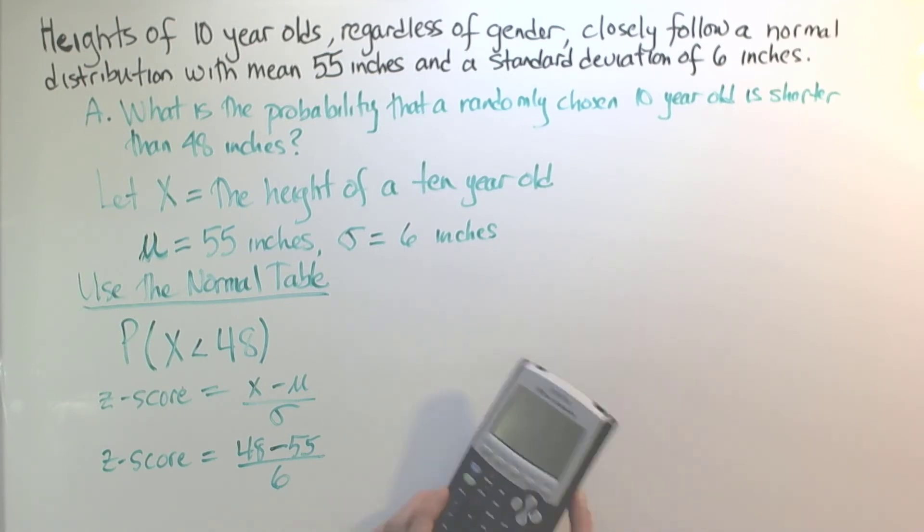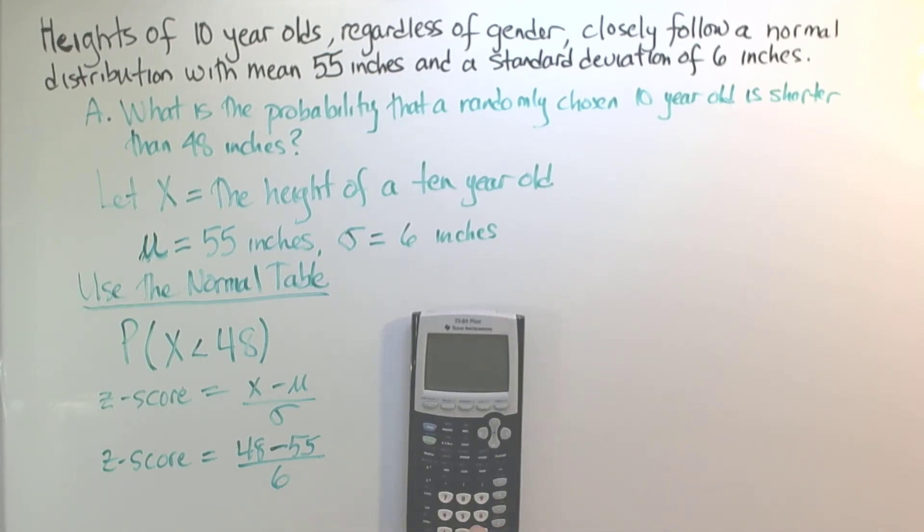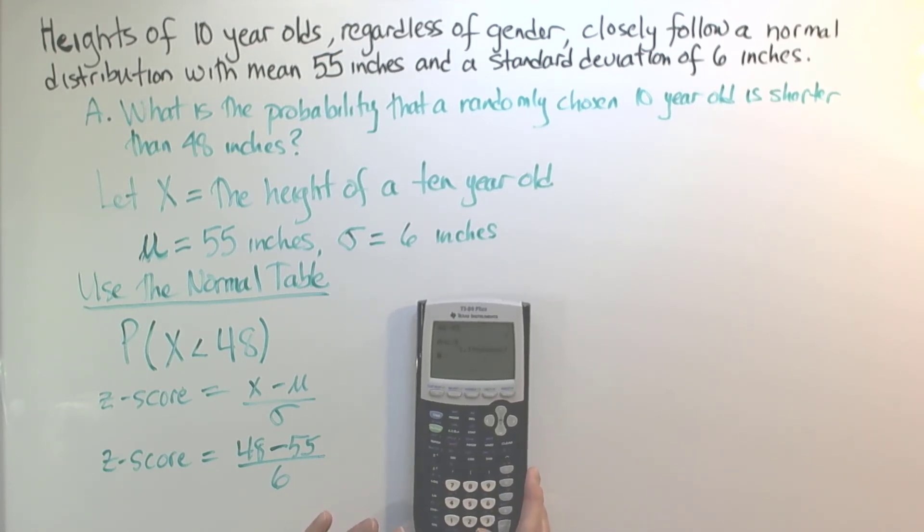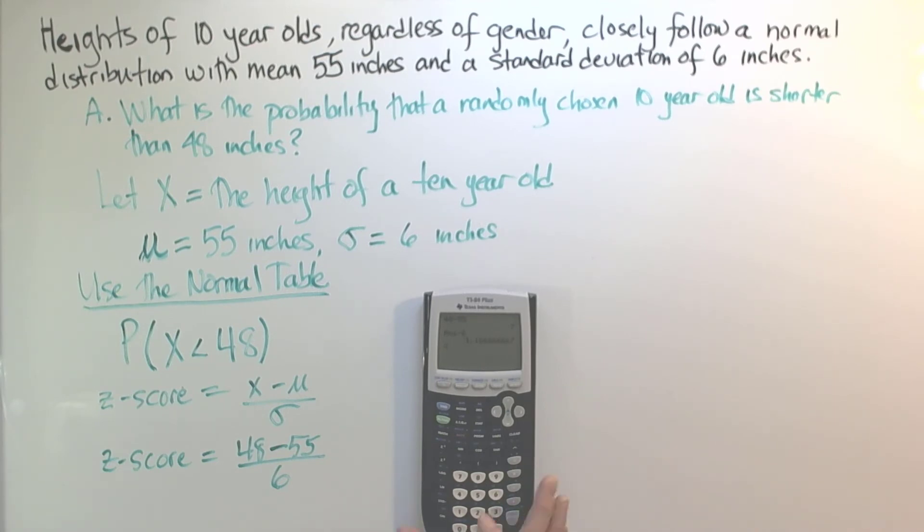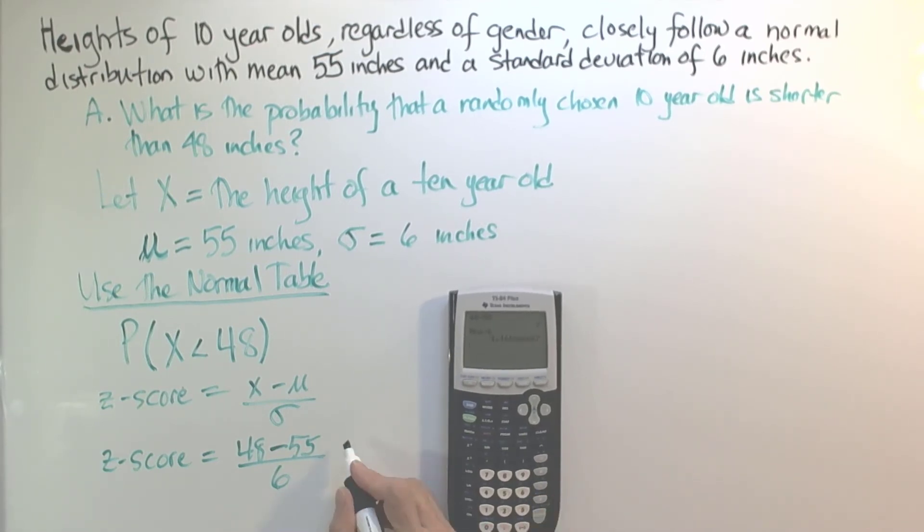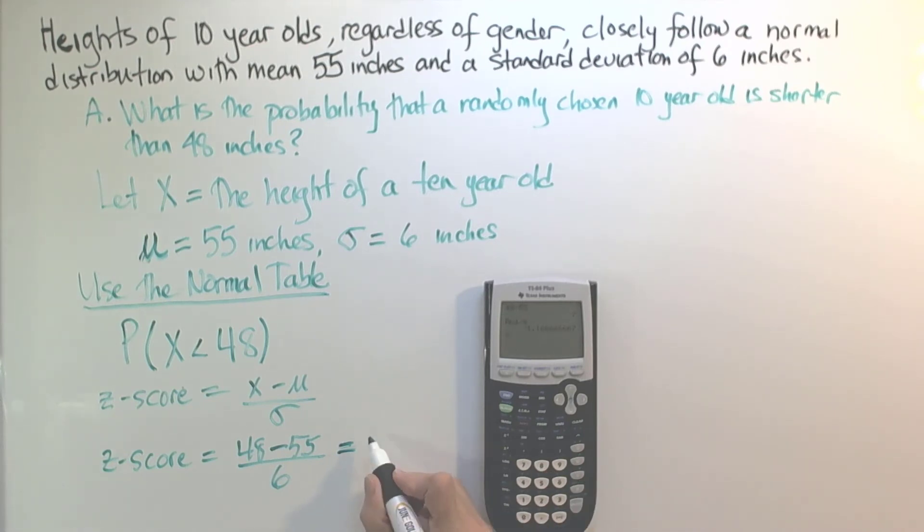And at this point, I'm going to just punch that into the calculator. 48 minus 55 divided by 6. And in order to use the normal table, remember you'll need to have your z-score rounded to two decimal places. So our z-score in this case is negative 1.12.